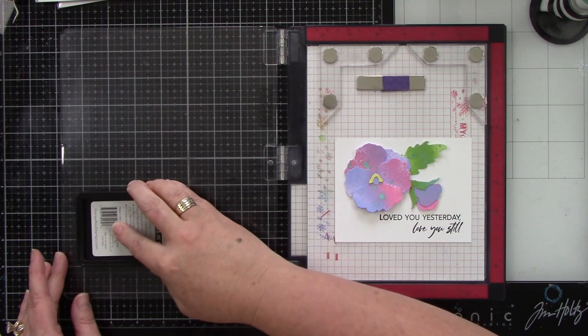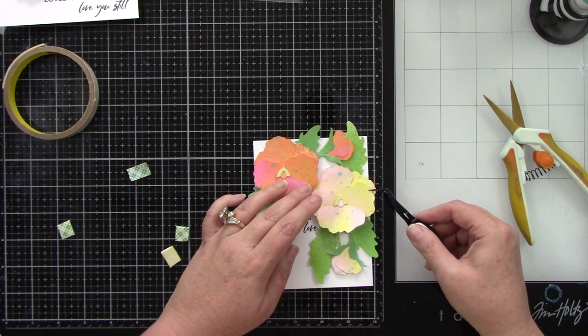And this background card panel is trimmed down about a half an inch on all sides. The other one is going to be a full size A2 card panel.